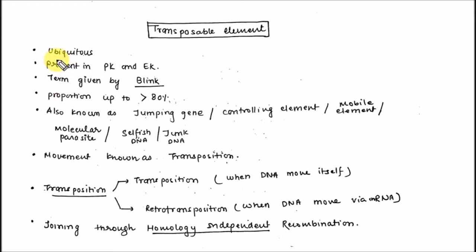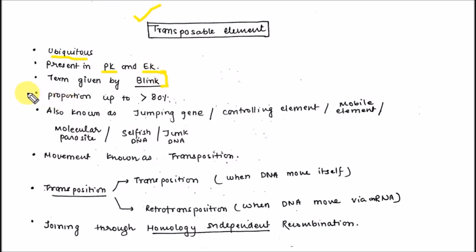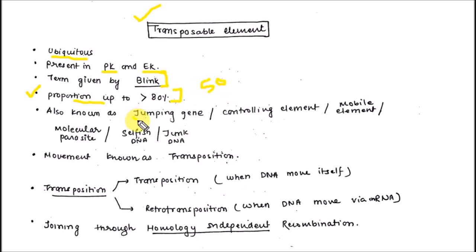Transposable elements are ubiquitous in nature, meaning they are present everywhere — in prokaryotes as well as in eukaryotes. The term was basically given by McClintock. In prokaryotes, transposable elements are present in greater than 80% of the genome, and in eukaryotes, greater than 50%.